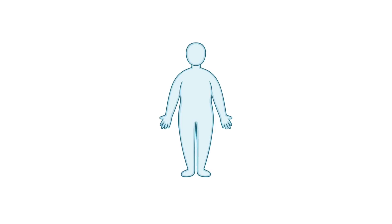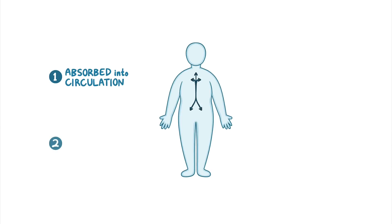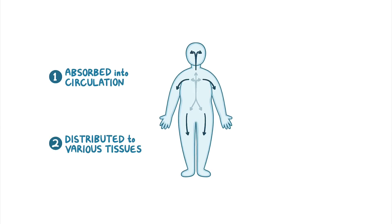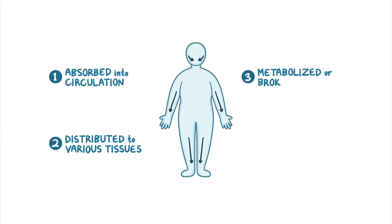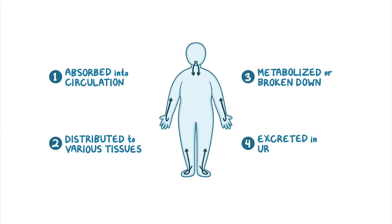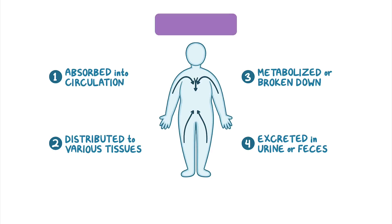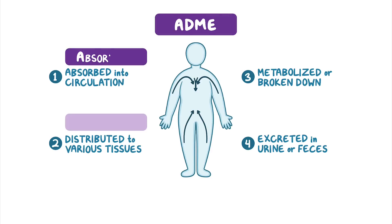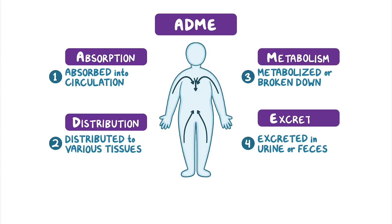Once a medication is administered, it first has to be absorbed into the circulation, then distributed throughout the body, metabolized or broken down, and finally excreted in the urine or feces. This process can be broken down into four components with the acronym ADME, which stands for absorption, distribution, metabolism, and excretion.